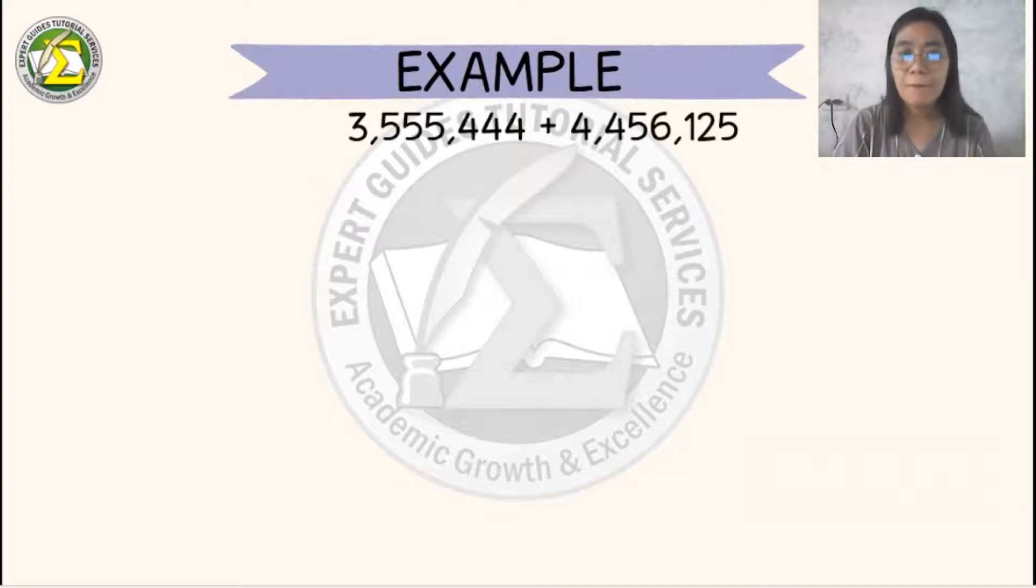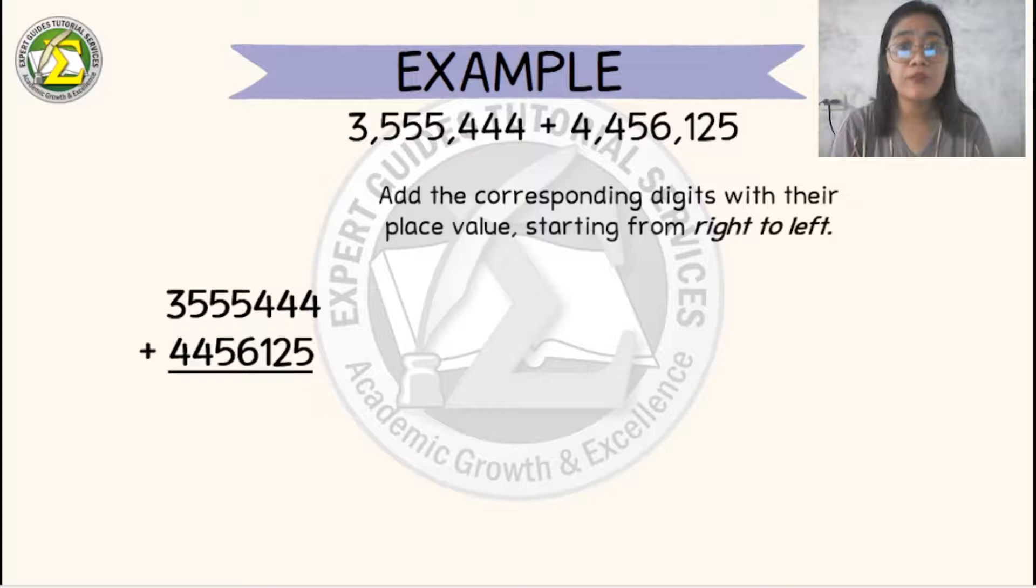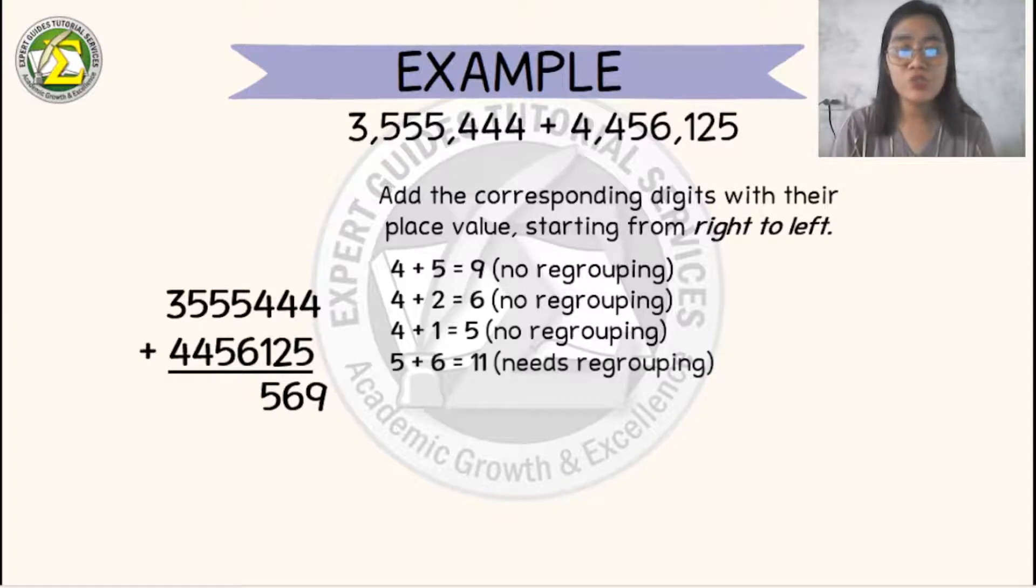So let's take another example. If we have 3,555,444 plus 4,456,125, don't forget to add the corresponding digits with their place values starting from right to left. So 4 plus 5 will become 9, 4 plus 2 will become 6, 4 plus 1 will become 5, 5 plus 6 will become 11. So you need to regroup.